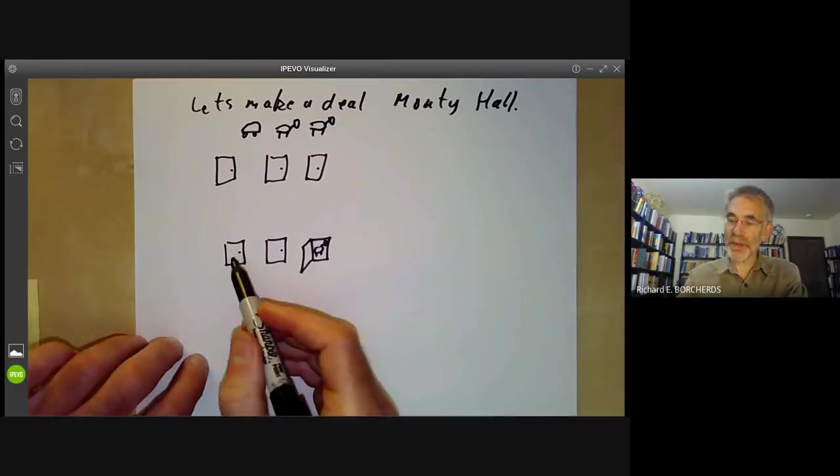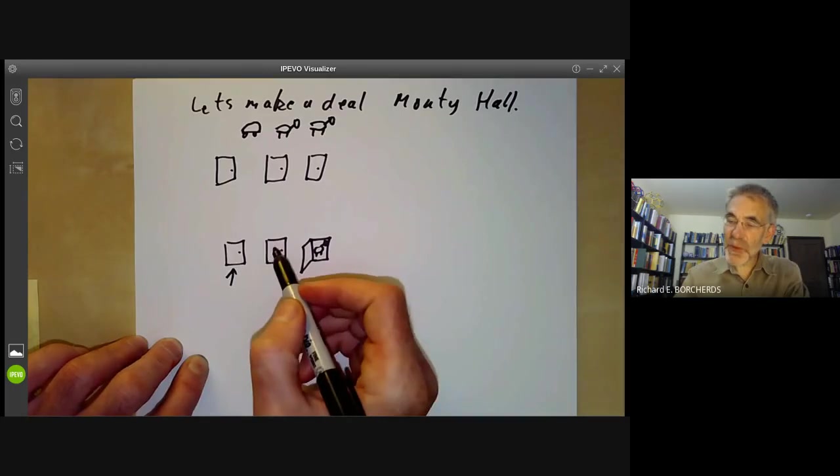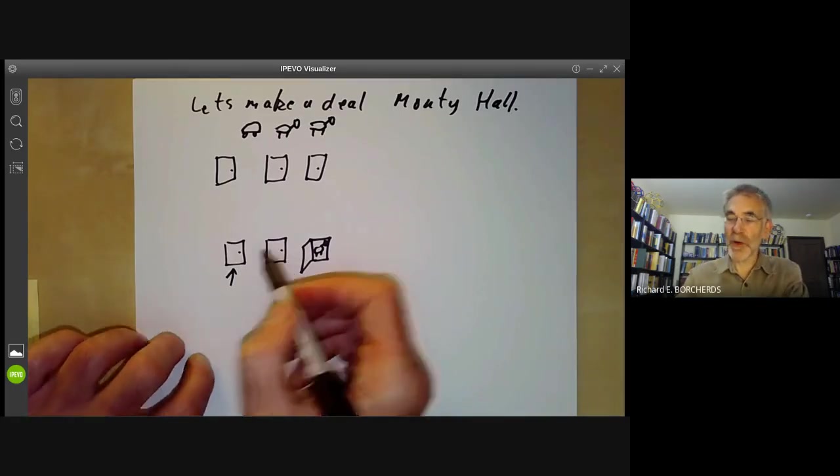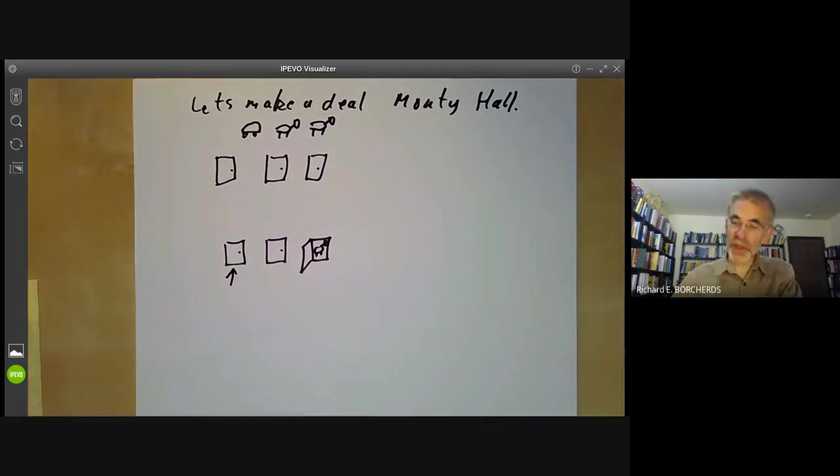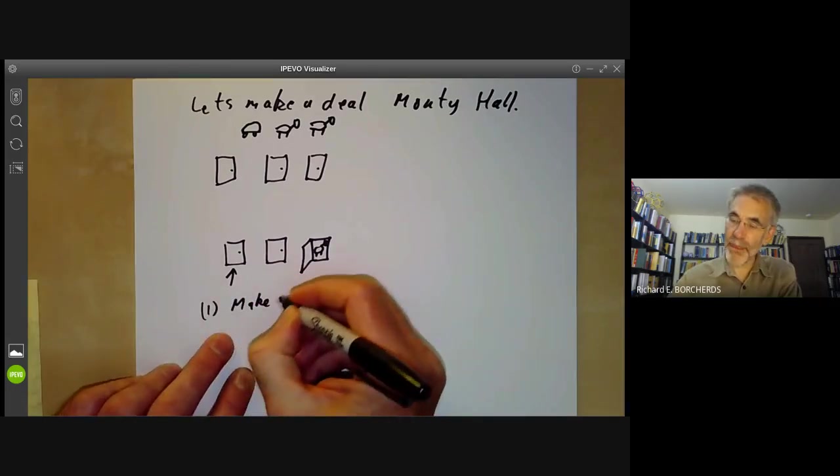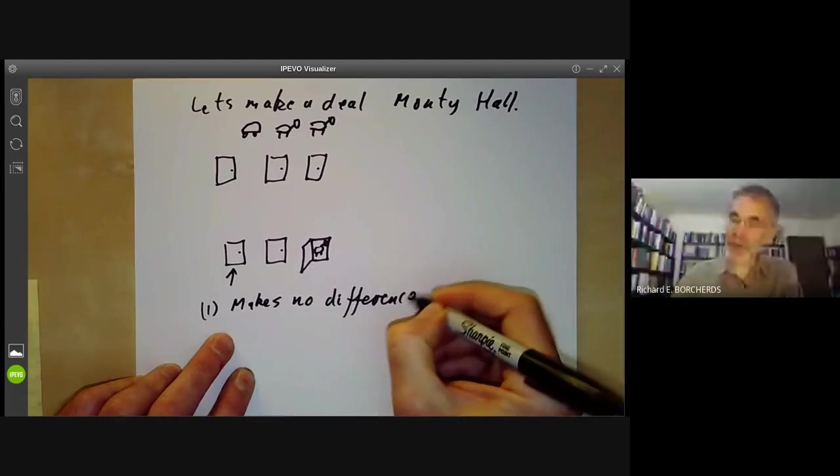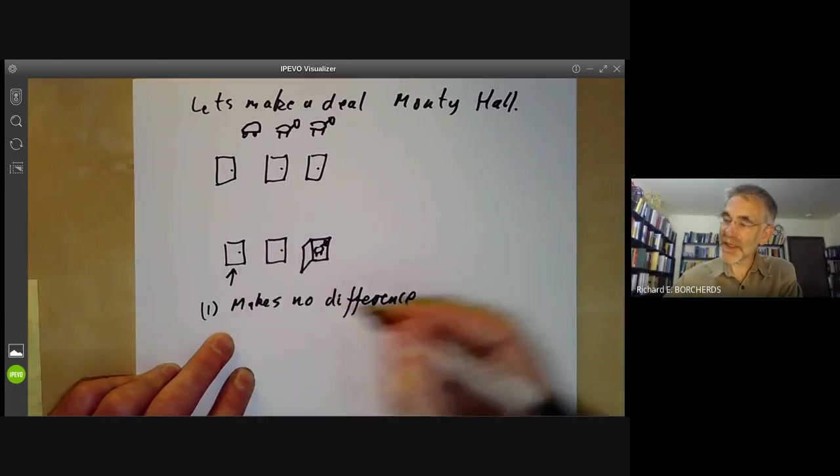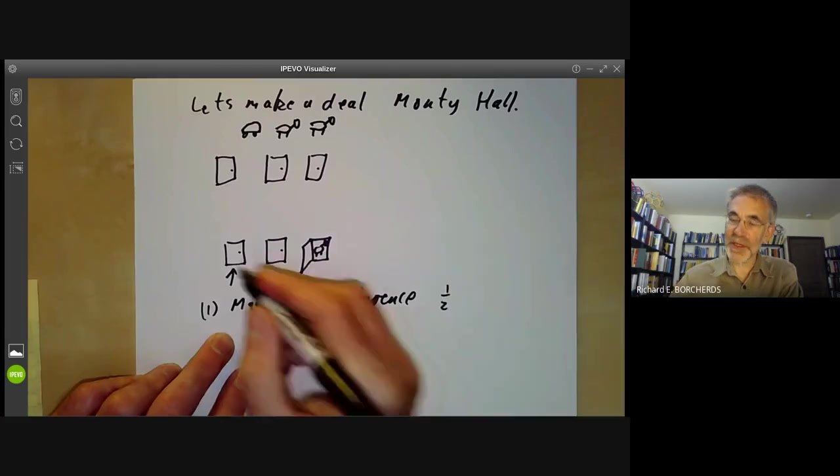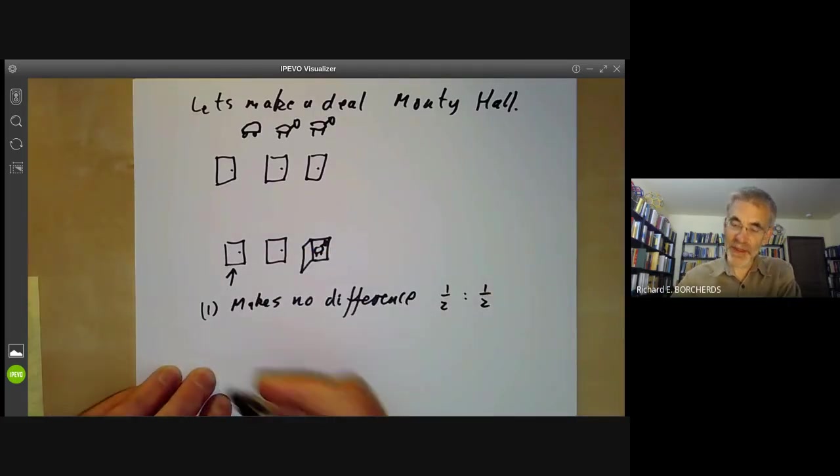And the question is, if you pick this door, do you then switch to the second door? Or does it make no difference? And there are two arguments. The first argument says it makes no difference. That these two doors are equivalent. So there's a one in two chance the goat is behind the first door and a one in two chance that is behind the second door.